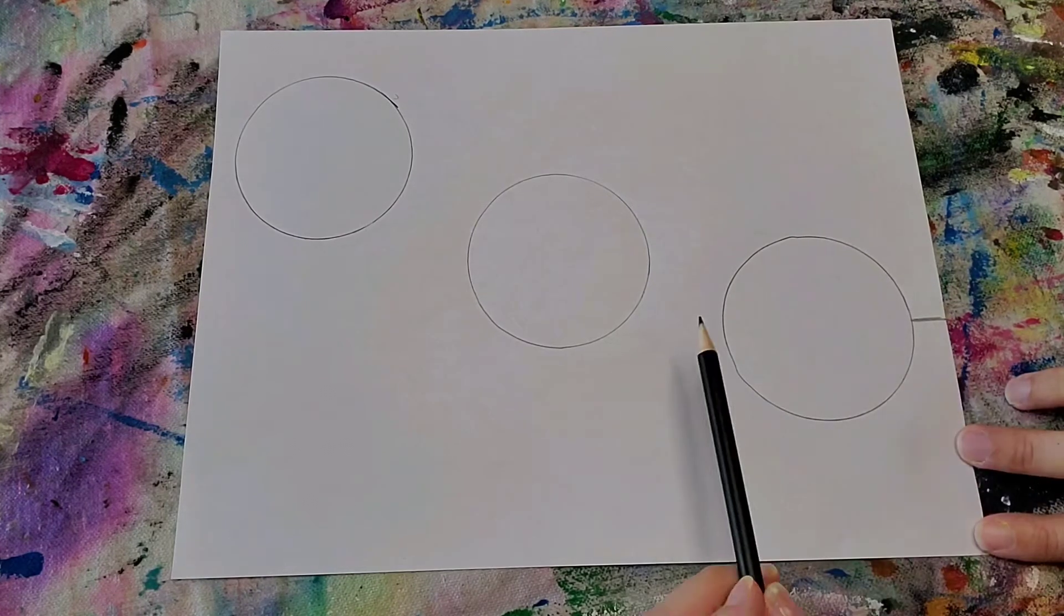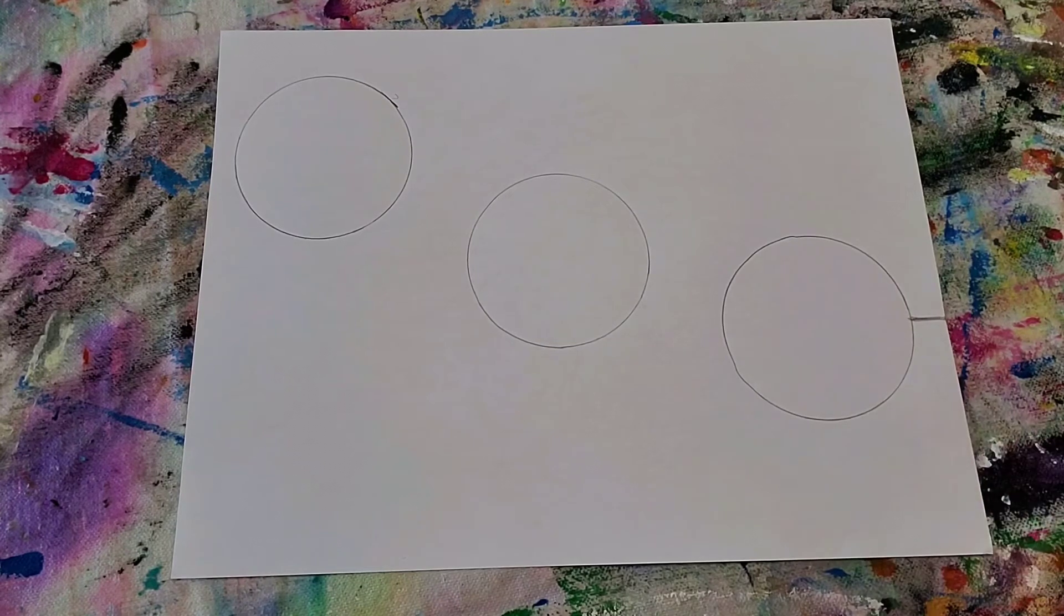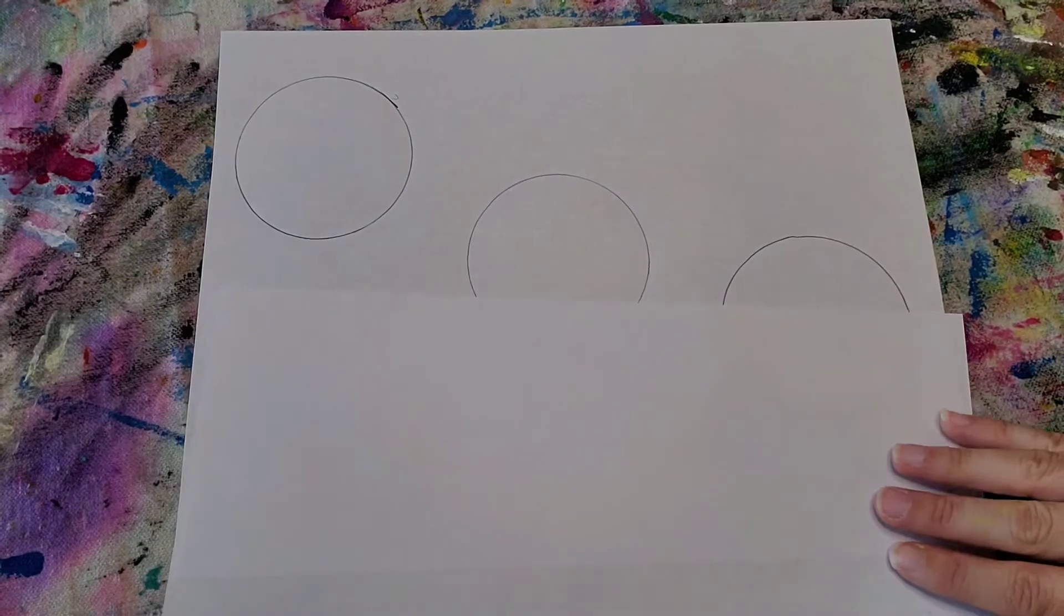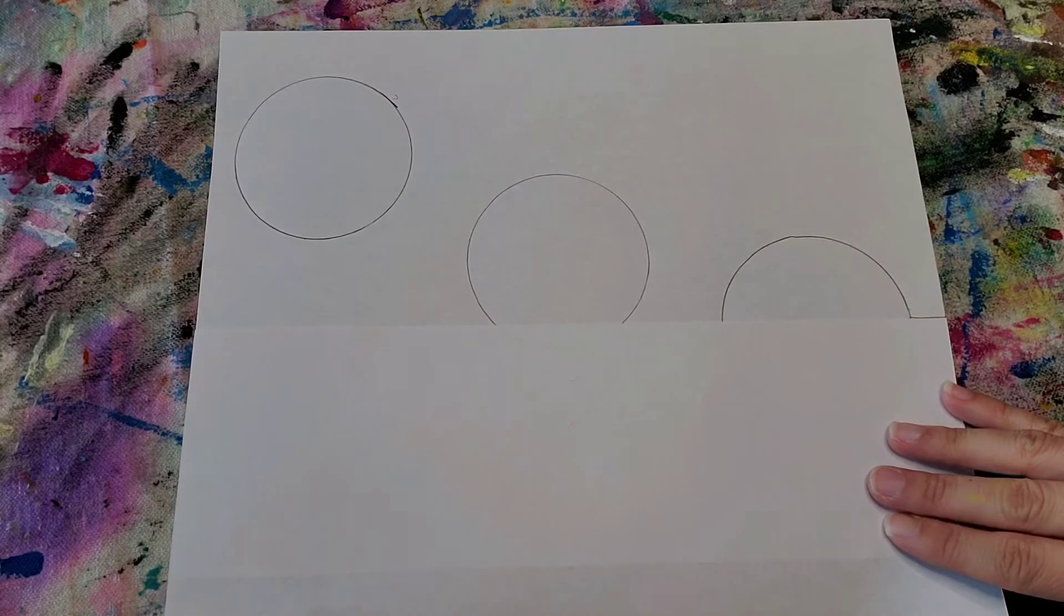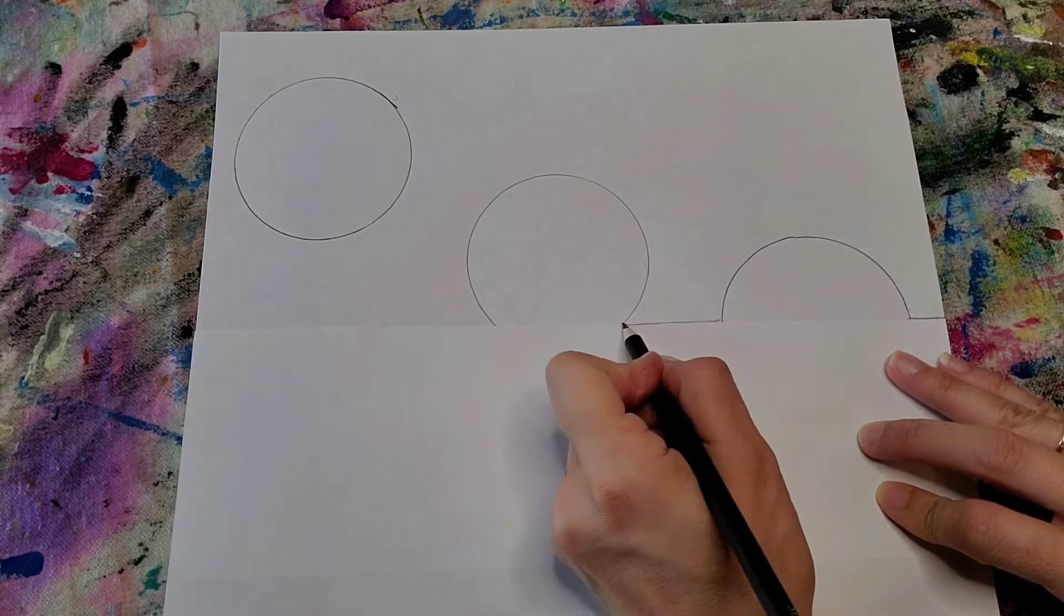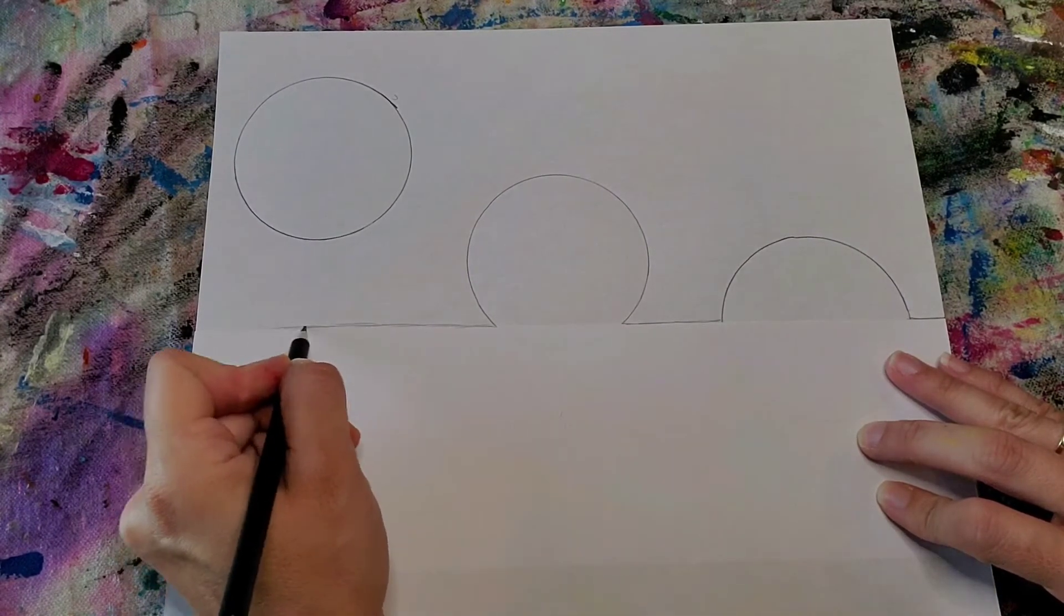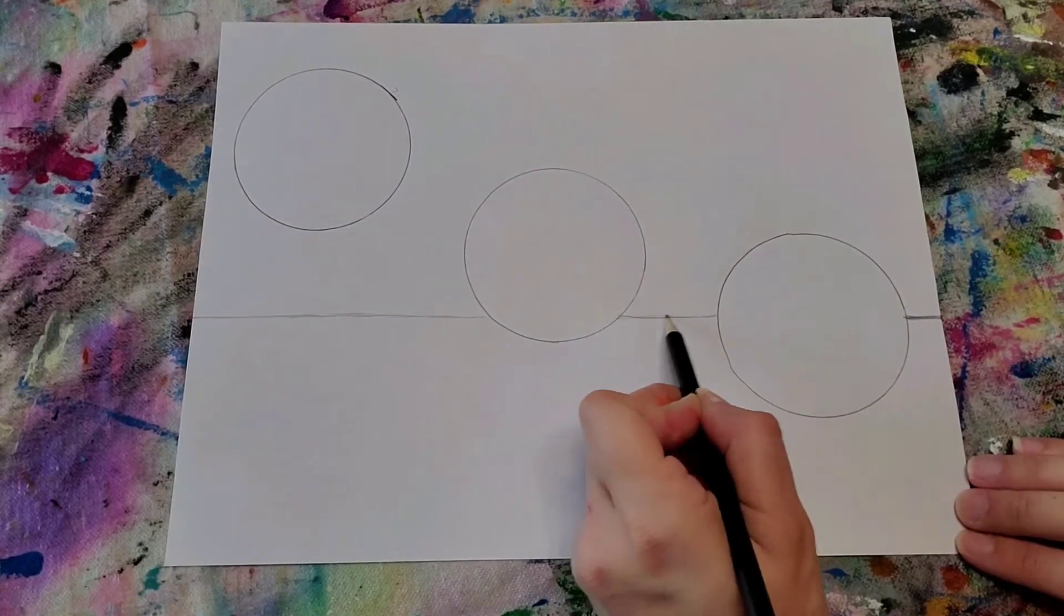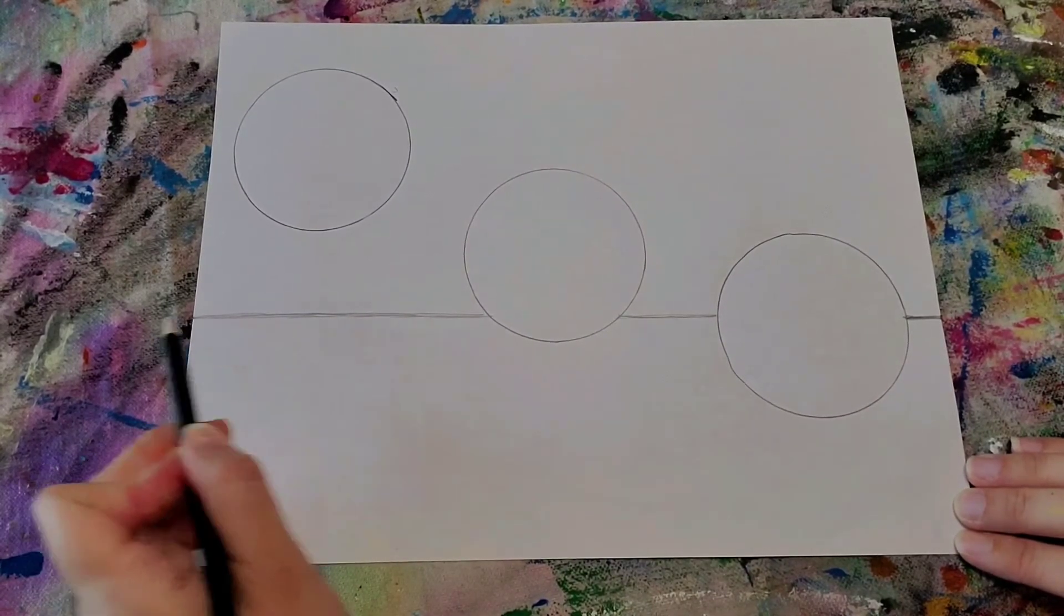You can use a ruler if you want, you can use another piece of paper if you want, or you can just eyeball it. You can place another piece of paper there and then you're gonna just keep going. So there is my ground. I'll make this darker so you could see it.